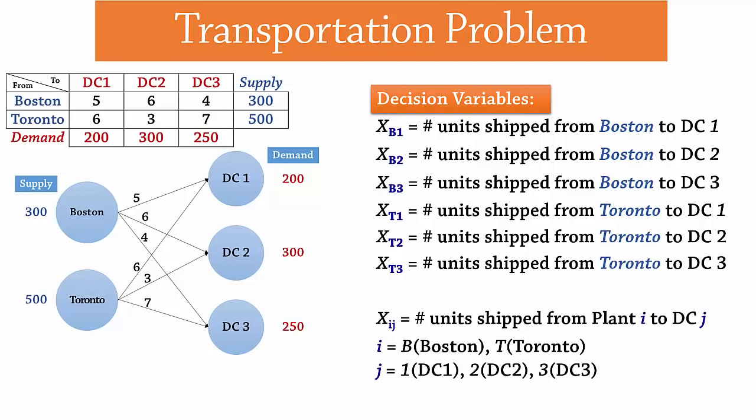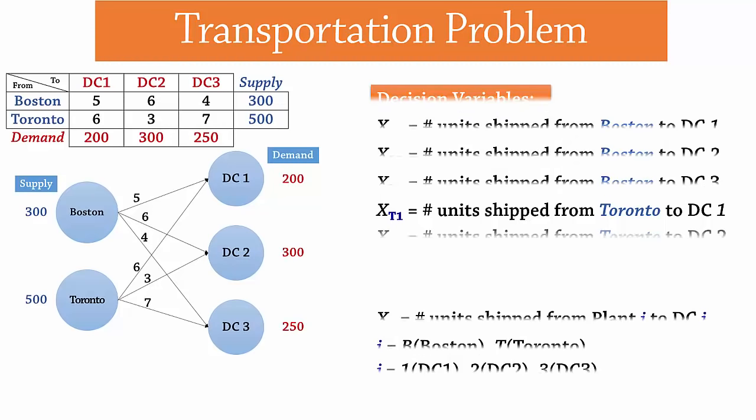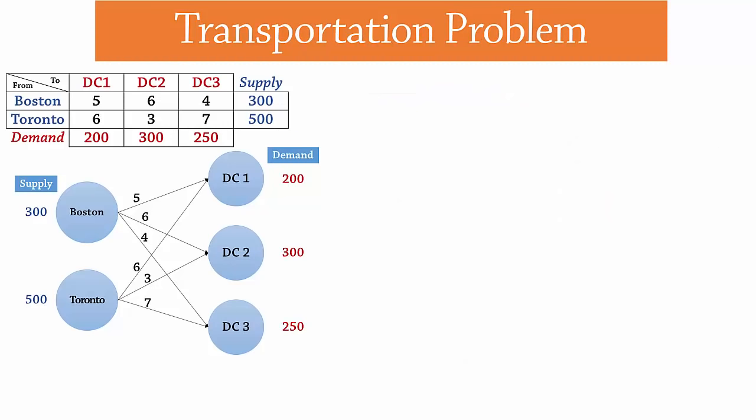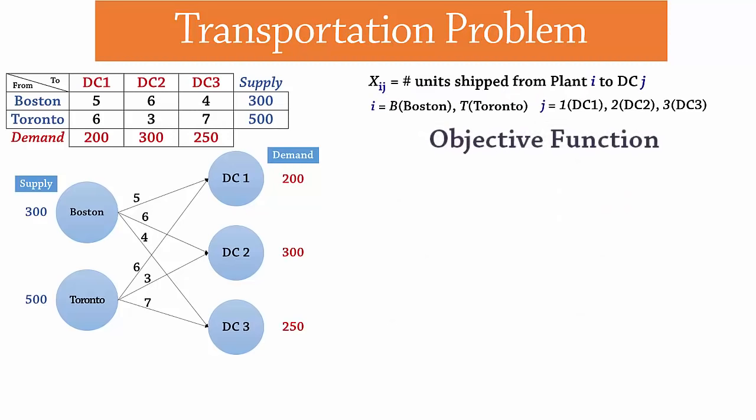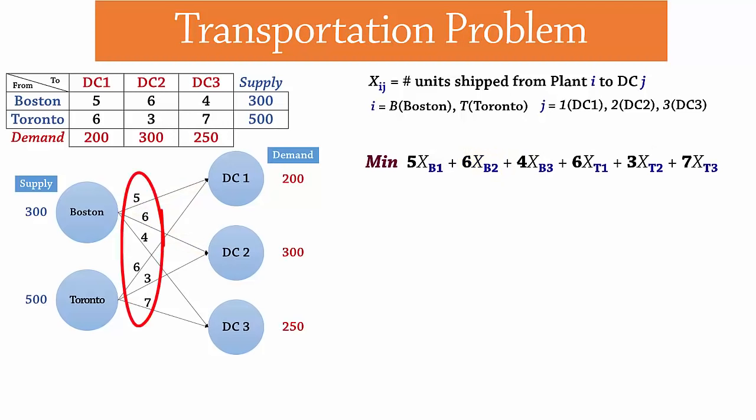Next, we can state the objective function. Since the objective function is to minimize cost, we write the objective function as follows. Minimize 5 times the number of units shipped from Boston to DC1 plus 6 times the number of units shipped to DC2 and so on. Note that every single cost is accounted for in the objective function.